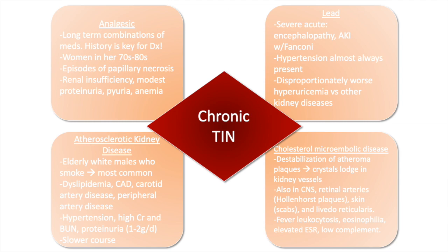Chronic TIN is a different story — its presentation is much more insidious and has a wide variety of causes. TIN caused by analgesics is usually due to long-term combinations of medications and typically presents in women in the 6th or 7th decade with episodes of papillary necrosis or renal insufficiency, modest proteinuria, pyuria, and anemia. Acute lead nephropathy presents with encephalopathy and acute kidney injury with Fanconi syndrome. Chronic lead nephropathy almost always presents with hypertension and disproportionately worse hyperuricemia compared to other kidney diseases. Atherosclerotic kidney disease commonly presents in elderly white males who smoke and is commonly associated with dyslipidemias, coronary, carotid, and peripheral artery disease.